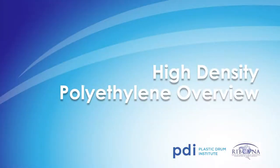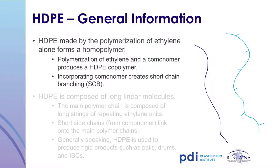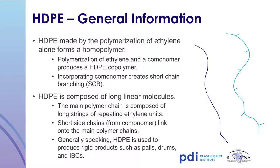High-density polyethylene is made by polymerizing ethylene with a metal-based catalyst. If only ethylene is used, that resin type is called a homopolymer, resulting in a very long and straight chain of molecules. When a co-monomer is added, forming short-chain branches, the result is a high-density copolymer. The short-chain branches result in physical properties such as improved impact strength.